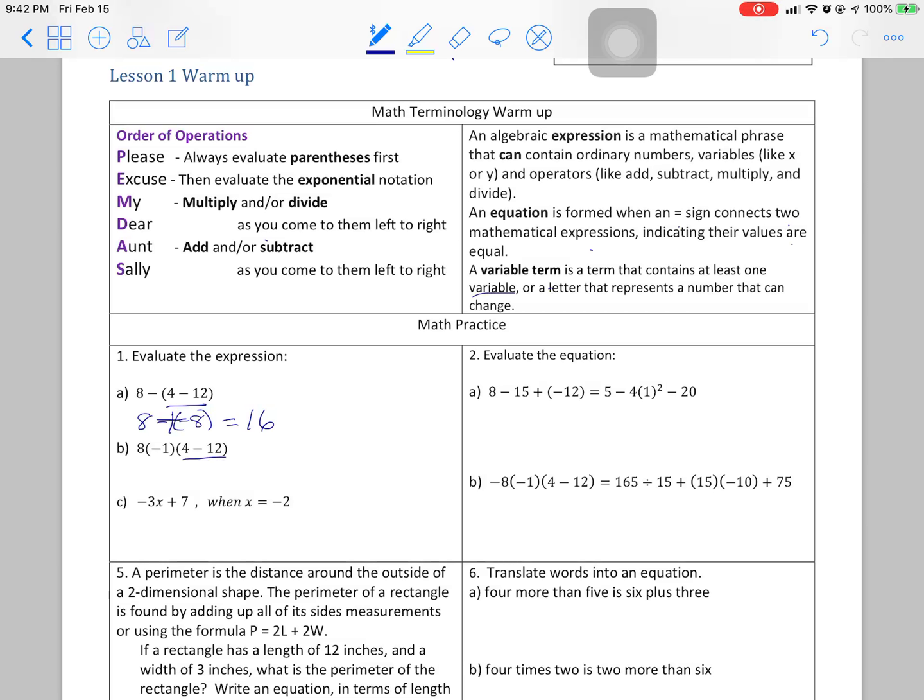This one also has parentheses. This is 8 times negative 1 times negative 8. So these are three terms multiplied together. Two negatives make a positive, positive times 8. So this is really 8 times 8, or 64. This one is an algebraic expression with a variable, and it says X is going to be negative 2 plus 7. So this first, negative 3 times negative 2 is 6 plus 7 is 13.